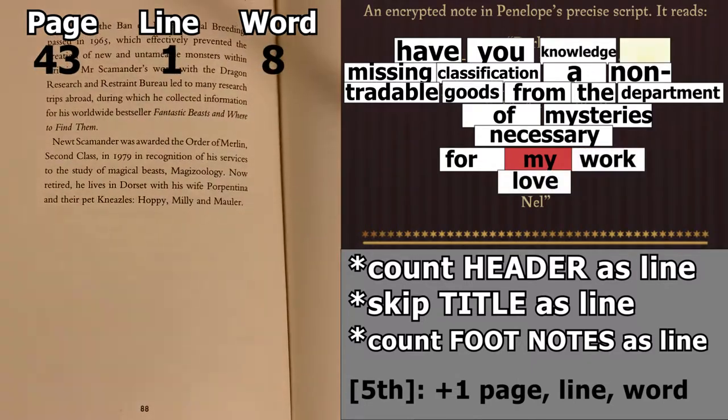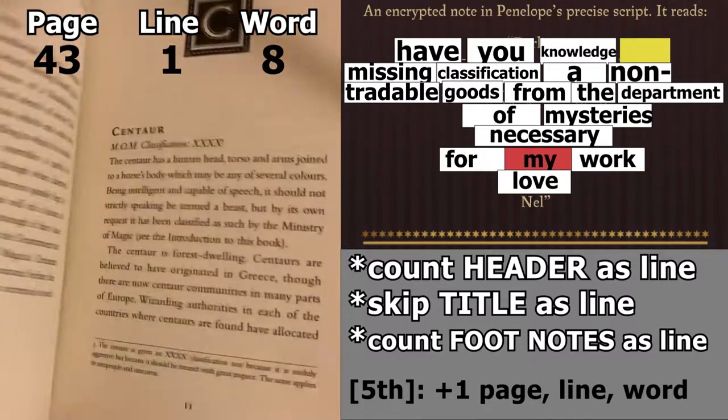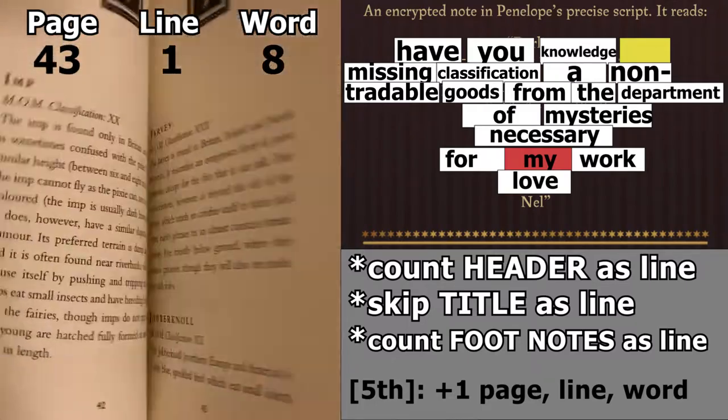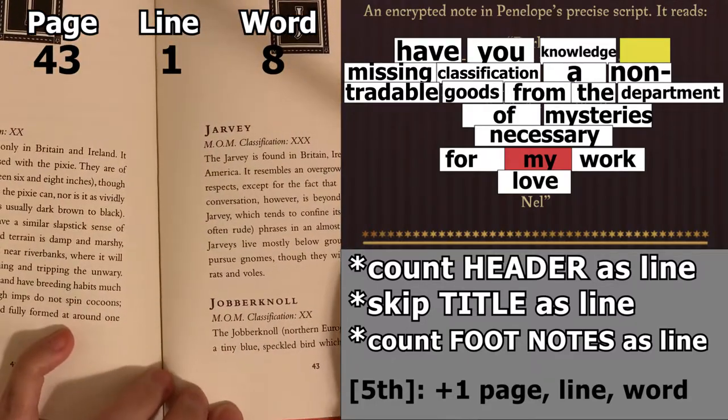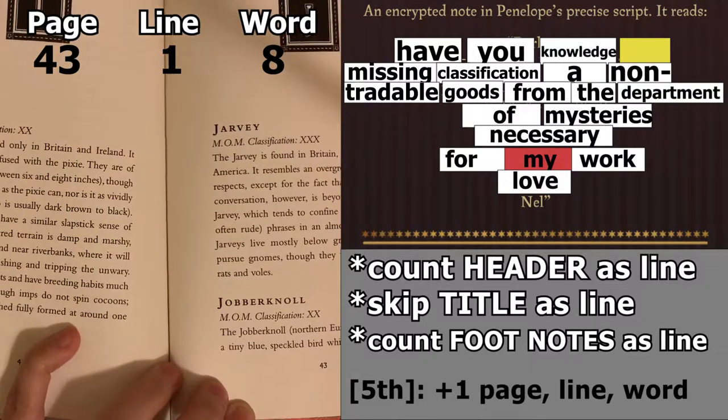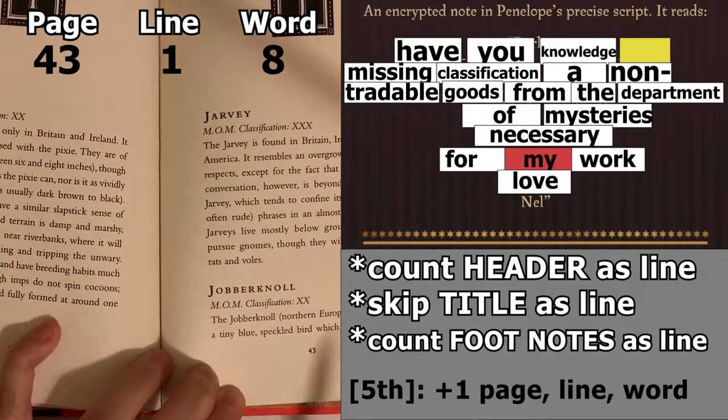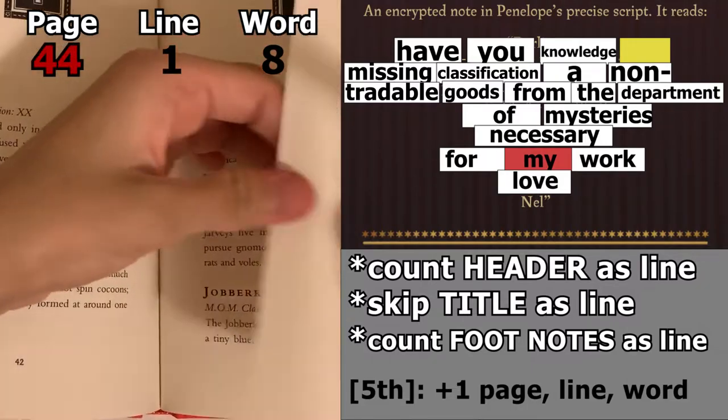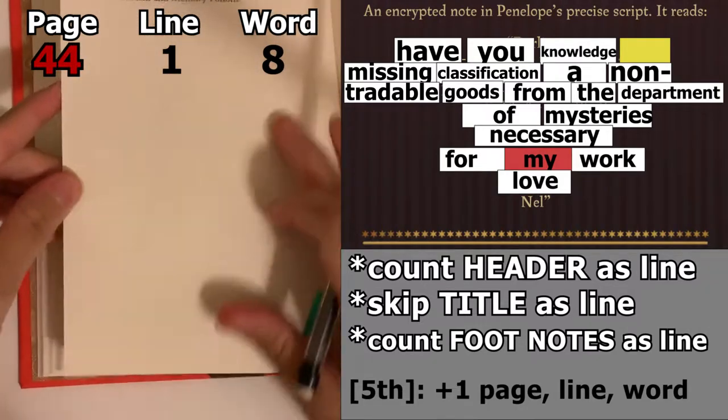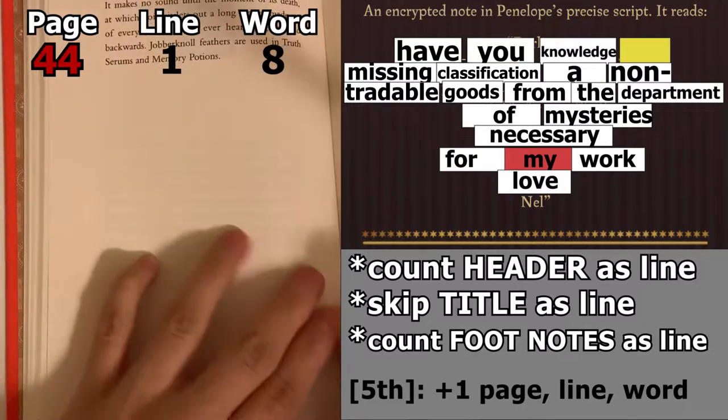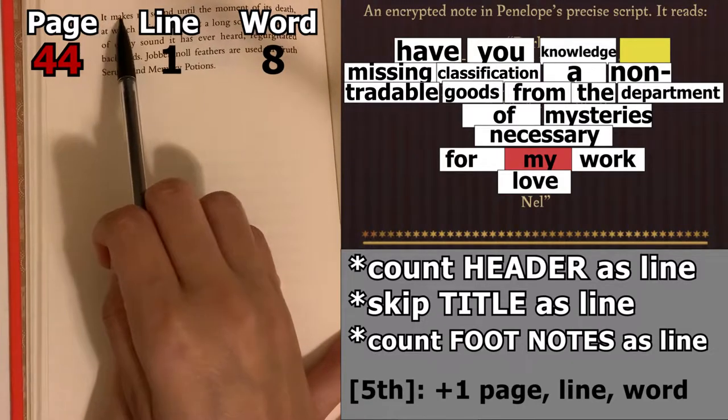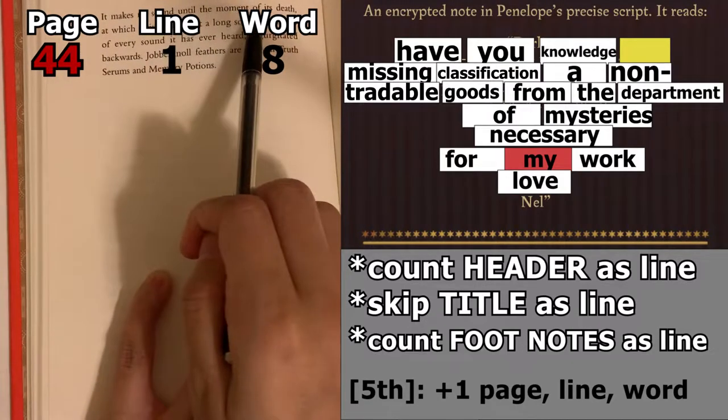So now we're going to go back to the fifth entry, where that is page 43. So originally we didn't have anything. And now we're going to move forward. So we're going from page 43 to 44. And we're going to keep the next two. So line one, eighth word, of.